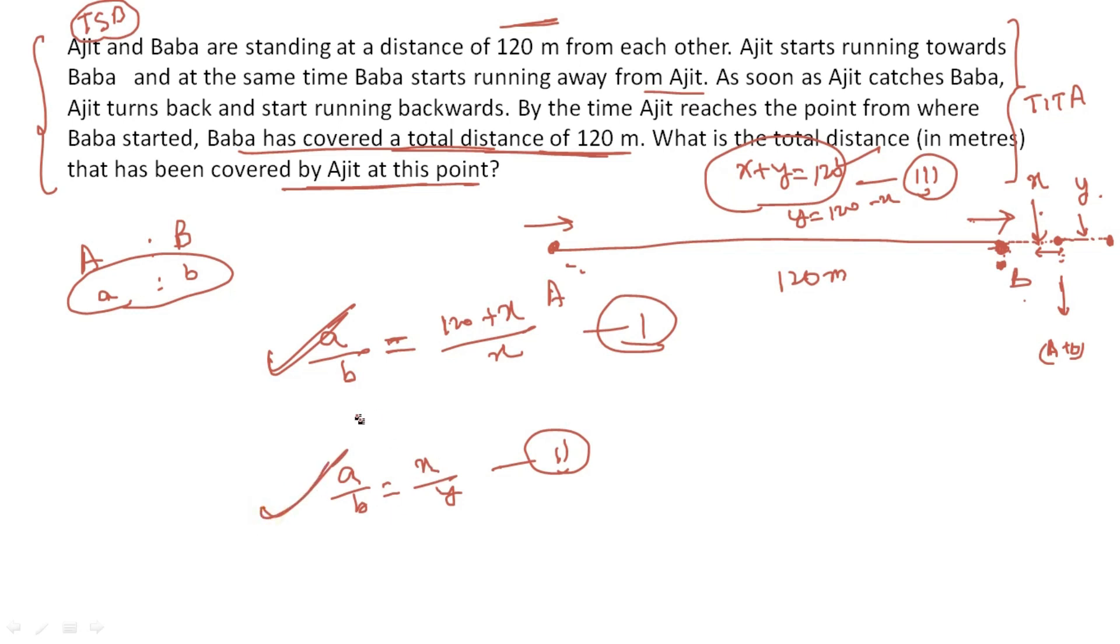I can use the same in my first relation or you can use it in the second, anywhere you want. I know a upon b is given and a upon b is also given here. I can use this relation. This is nothing but 120 plus x upon x, and here x upon y is given. Let me take x in terms of y. If I substitute directly, I know y I already have in terms of x, that is nothing but 120 minus x.